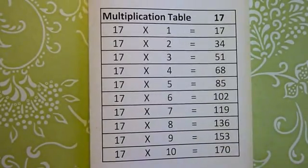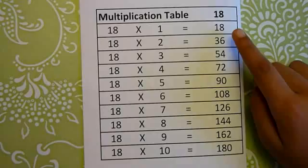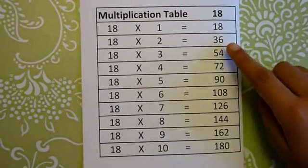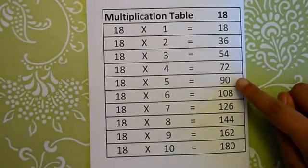Next, we'll go to multiplication table 18. 18 ones are 18, 18 twos are 36, 18 threes are 54, 18 fours are 72, 18 fives are 90.